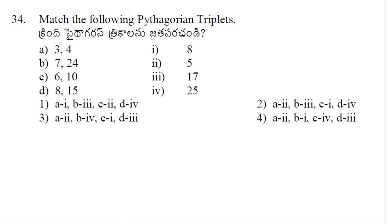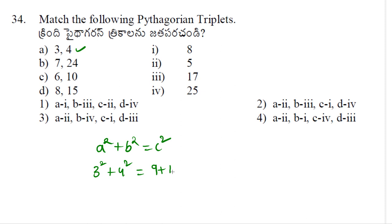Match the following Pythagorean triplets. Pythagorean triplets are three numbers satisfying a² + b² = c². For option A, take 3 and 4: 3² + 4² = 9 + 16 = 25 = 5². So 3, 4, 5 are Pythagorean triplets. We need to connect A with these.